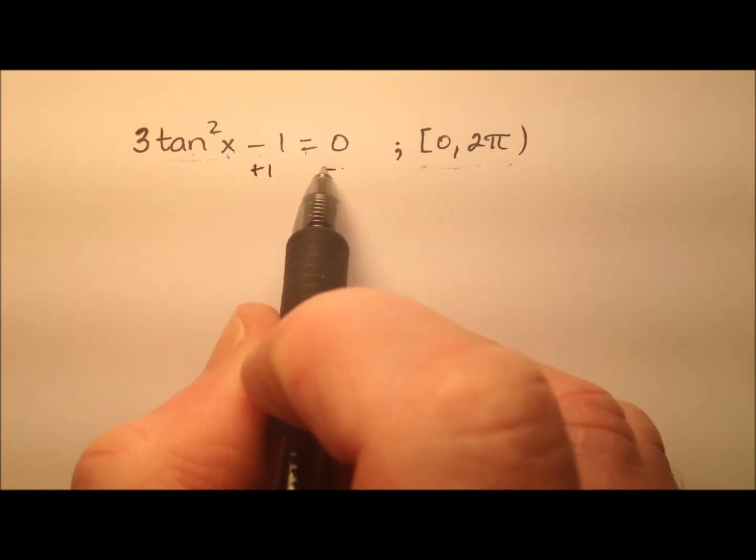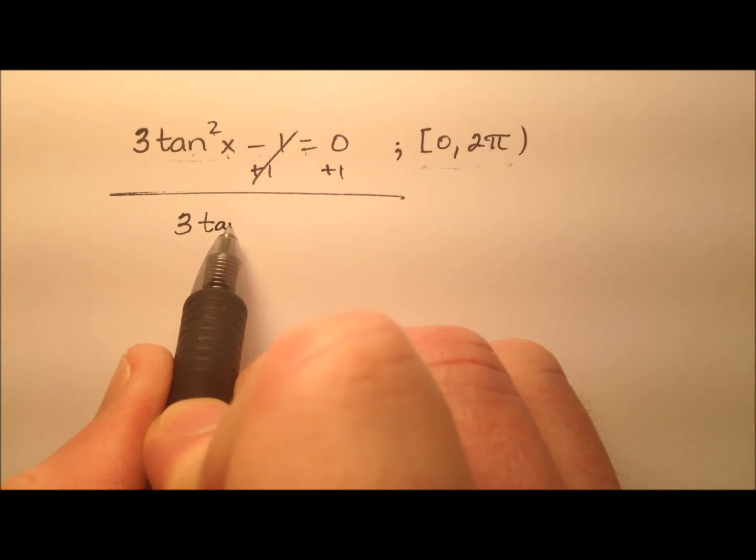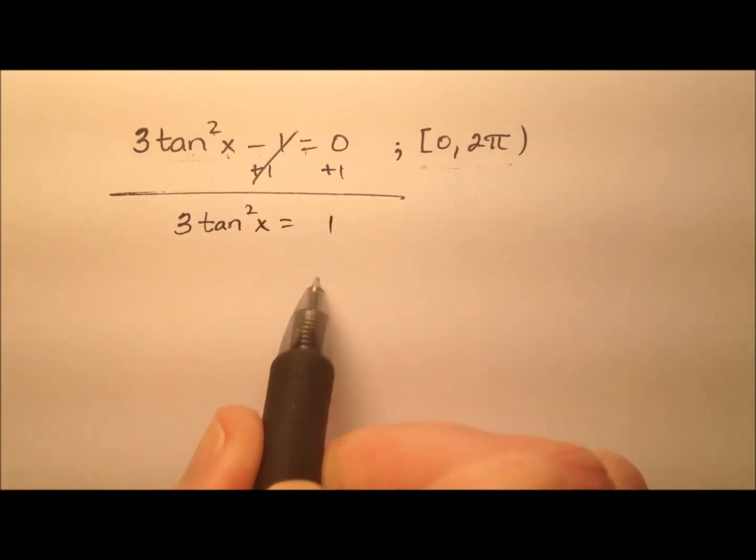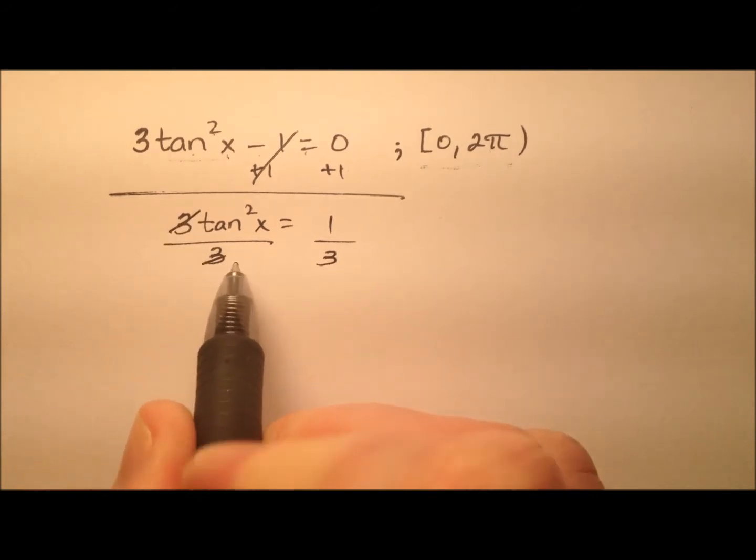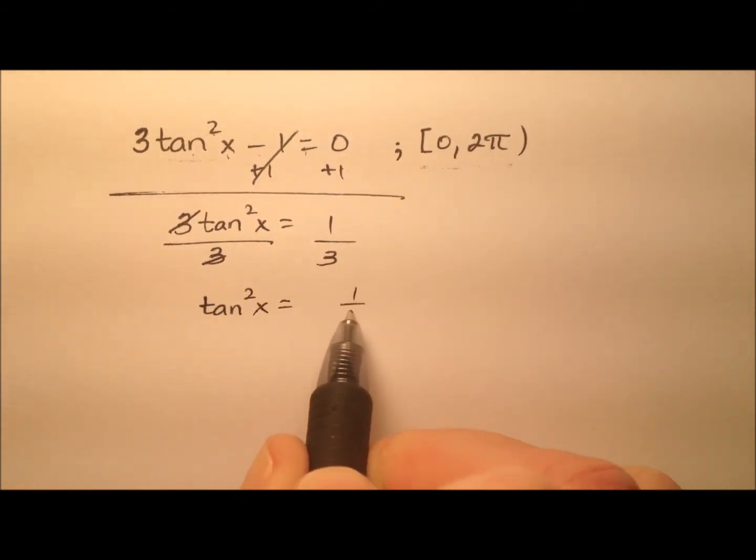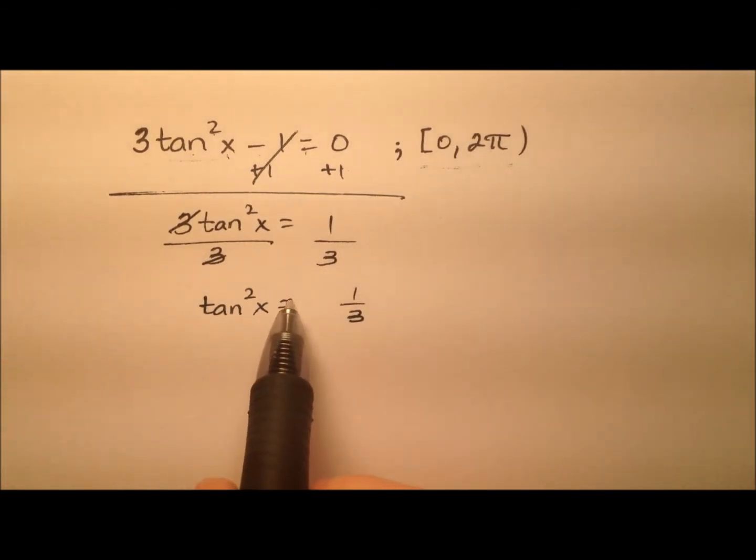Let's go ahead and start by adding 1 to both sides of our equation. So I'll have 3 times tangent squared x equals positive 1. And let's go ahead and divide by 3 to finish getting that tangent squared by itself. So I'll have 1 third right here. Okay, so the square of tangent x equals 1 third.